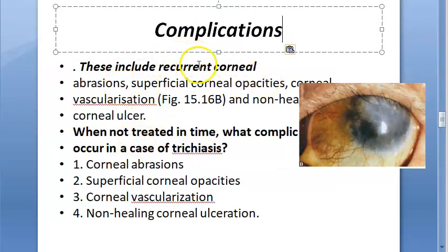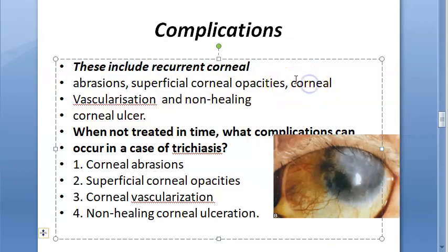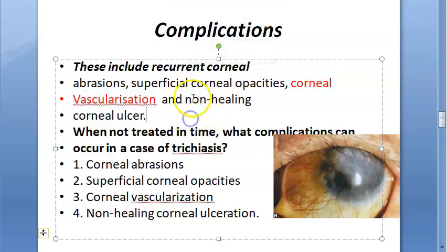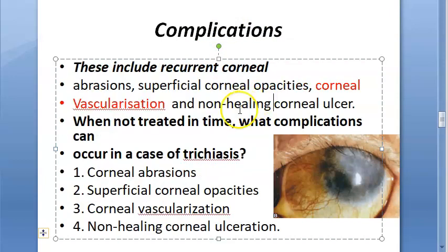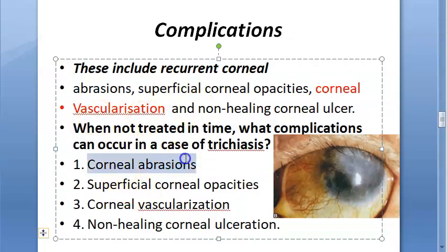If trichiasis is not treated, complications include recurrent corneal abrasions leading to corneal opacity, corneal vascularization making the cornea non-transparent, and non-healing corneal ulcers. Non-healing corneal ulcer is especially important to remember as a complication of untreated trichiasis.